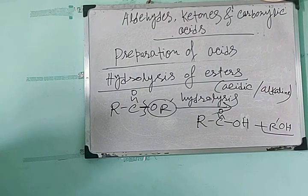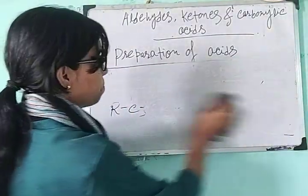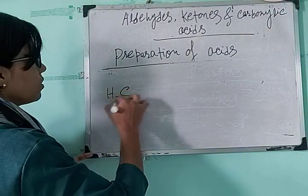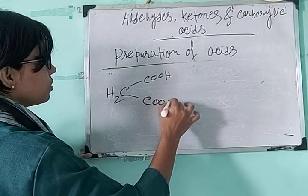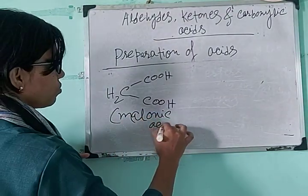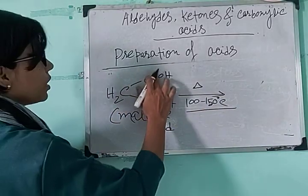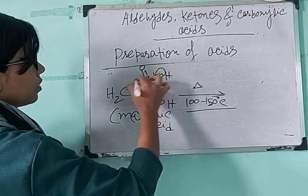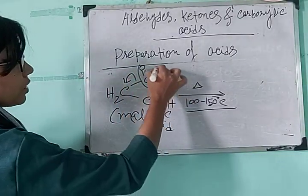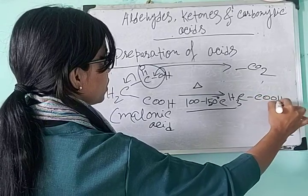So these are the main preparatory methods we generally use for carboxylic acid. One other preparatory method is from malonic acid or alkyl malonic acid. Malonic acid is CH2(COOH)2. When we heat malonic acid at nearly 100 to 150 degrees Celsius, carbon dioxide gas is eliminated. This portion is eliminated as CO2 and we get CH3COOH, that is acetic acid, from malonic acid.